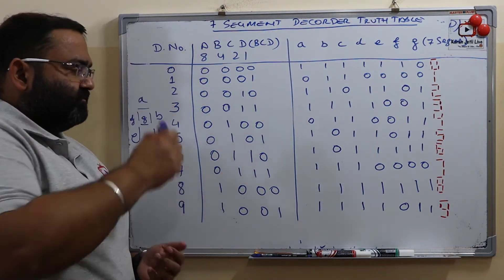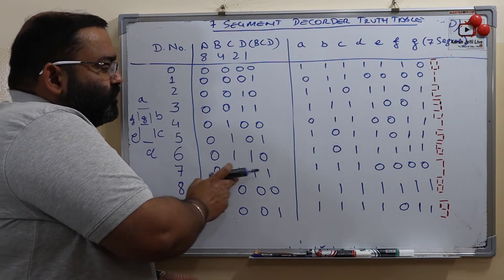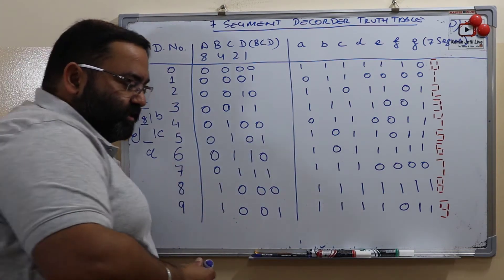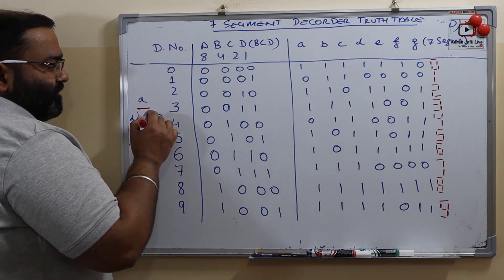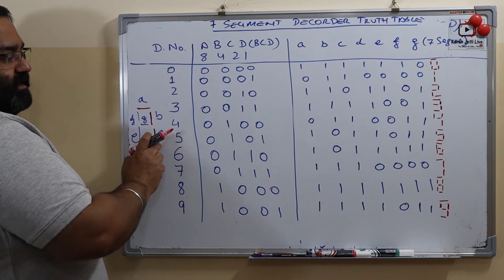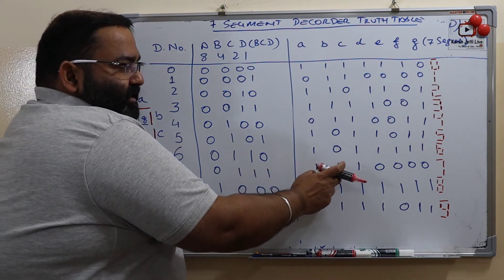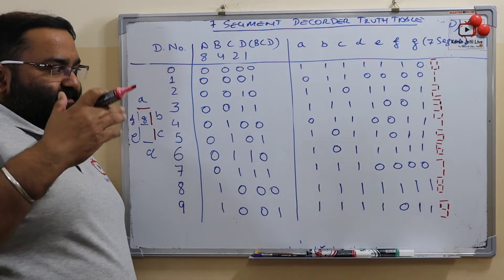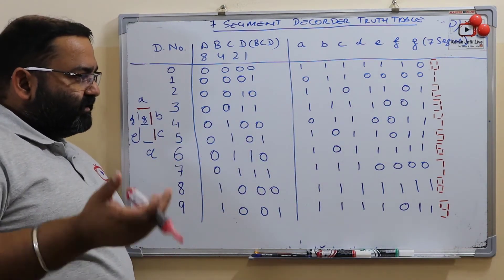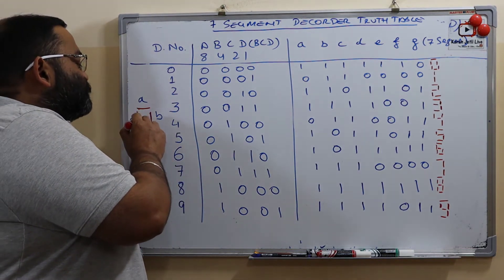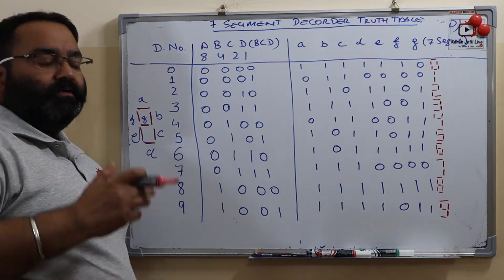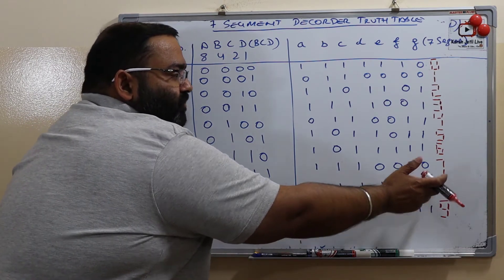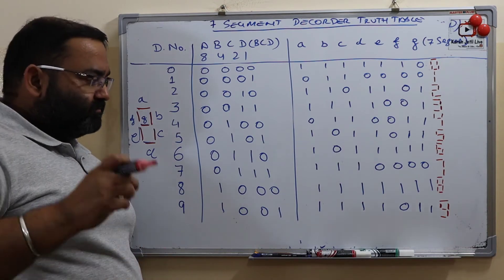Let us take number 7. What is 7 in BCD? It is 0111 — that is 4 plus 2 plus 1 gives us 7. To display 7, we need A, B, and C on. Rest everything is off, and we get 7 on the 7-segment display. For 8, it is easiest — the BCD is 1000, and all the segments A, B, C, D, E, F, G are on to display number 8.